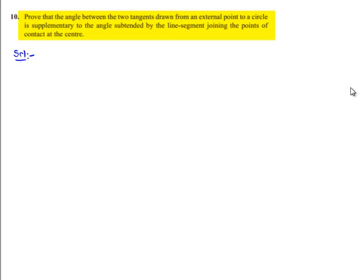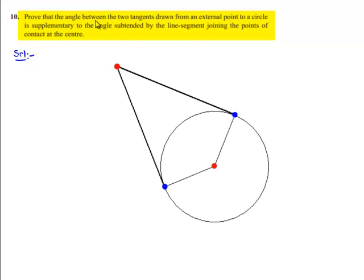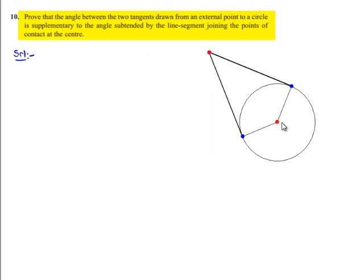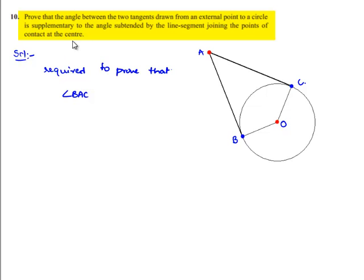Moving on to solution. Let us consider a circle with center O and tangents AB and AC drawn from external point A to the circle. B and C are the points of contact, so OB and OC are the lines joining the points of contact to the center. We need to prove that angle BAC plus angle BOC equals 180 degrees.